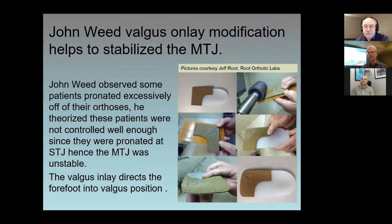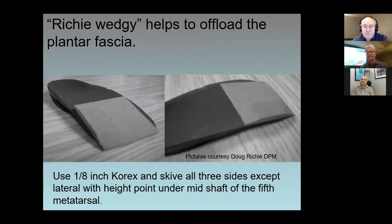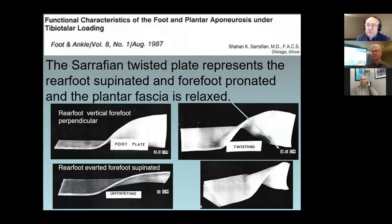These are pictures from Jeffrey at Root Orthotic Labs — he hadn't had to do this type of modification in years, as it was commonly done back in the 70s and 80s to salvage an orthotic device. The Ritchie wedge is basically the same thing — thickness underneath the fifth metatarsal head, beveled backwards toward the fifth metatarsal shaft and from lateral to medial toward the first metatarsal. It's causing a valgus force in the forefoot, taking stress off the plantar fascia.